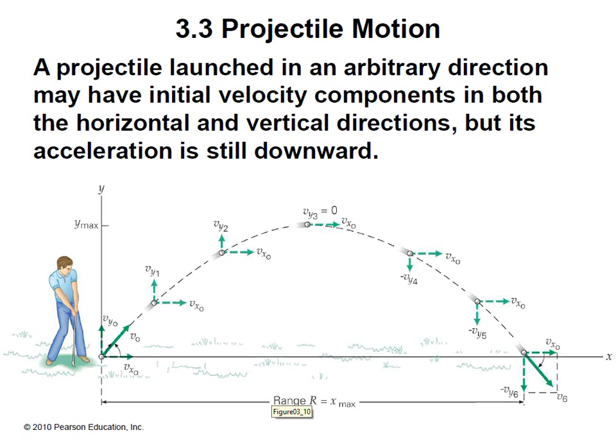Projectiles launched in an arbitrary direction may have initial velocity components with both horizontal and vertical directions, but its acceleration is still downward. So as soon as this golfer hits that ball, gravity is pulling on it. The instant that ball leaves the ground, gravity is pulling on it. Initially, we see that the velocity in the y direction is positive. At the peak, or the maximum height, the y velocity is zero because it goes from a positive y velocity to a negative y velocity. Although, if you look and observe, the x velocity is the same. It remains constant throughout the entire path of the ball.